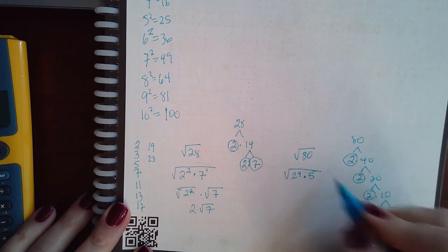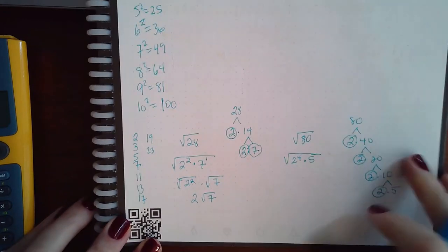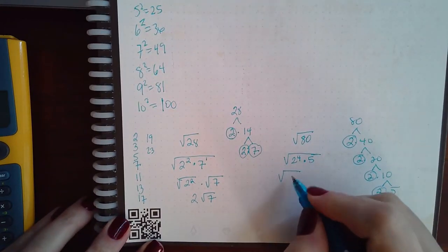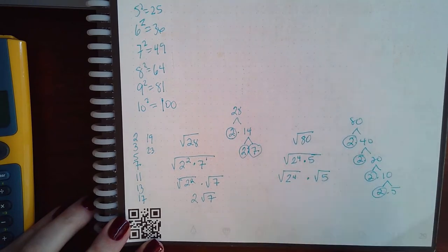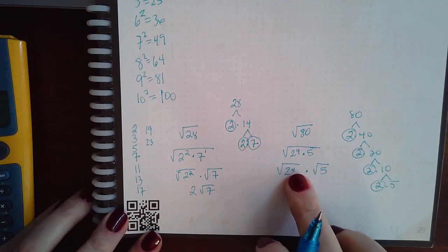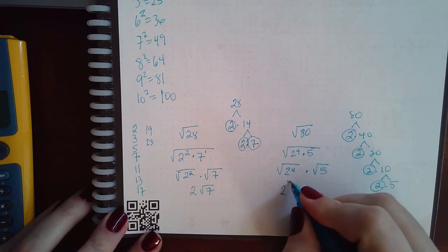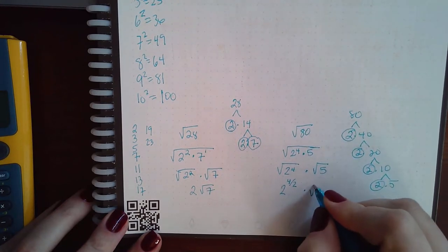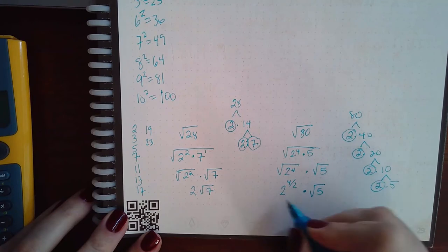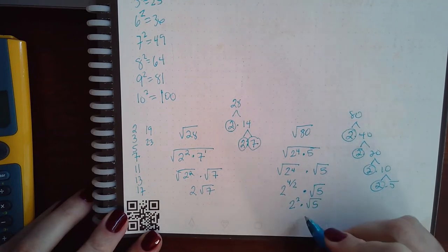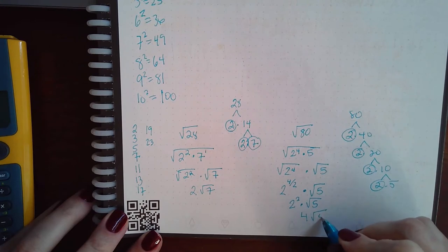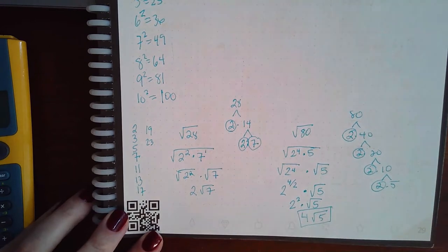Then I have 1, 2, 3, 4 2's, so this becomes 2 to the 4th times 5. So then 2 to the 4th, we get square root of 2 to the 4th and then the square root of 5. We already know when we have a power like this, you could write it as 2 to the 4 over 2, leave this one alone, and then that becomes 2 squared times square root of 5, or 4 times square root of 5.